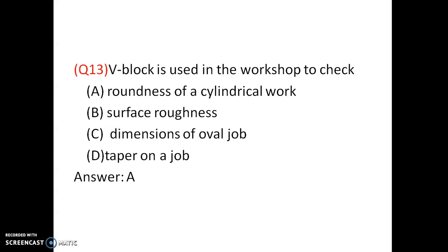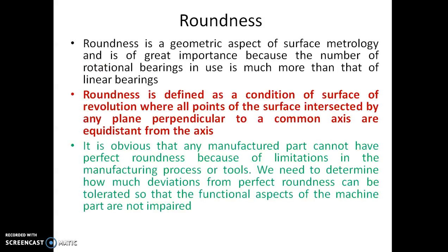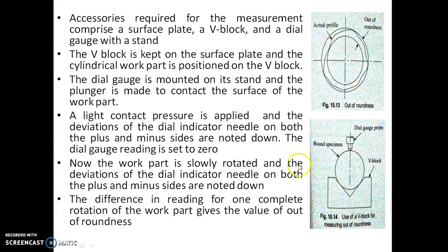V-blocks are used in the workshop to check the roundness of a cylindrical workpiece. Roundness is defined as a condition of a surface of revolution where all points of the surface intersected by any plane perpendicular to a common axis are equidistant from that axis. Any manufactured part cannot have perfect roundness because of limitations in the manufacturing process.